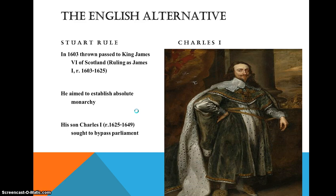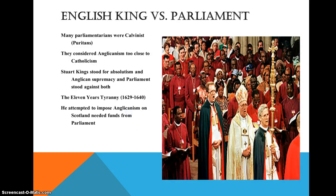Stuart rule began in 1603 when the throne was passed to King James of Scotland, ruling as King James I — they sometimes change their names to become king. He aimed to establish absolute monarchy as well, and his son Charles I sought to bypass parliament. How successful was that?